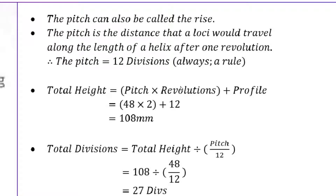The total height formula is: pitch multiplied by the number of revolutions, plus the profile height. The profile is usually three divisions. So here it's 48 times 2 plus 12, which gives us 108 — that's the total height. Please copy this down and make sure you study that formula so you can calculate the height when it's not given.